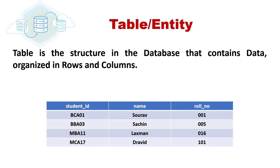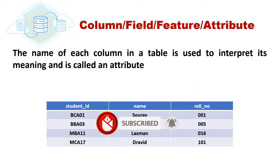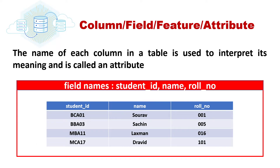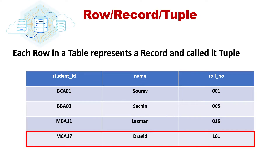So what is a table or entity? A table is the structure in the database that contains data organized in rows and columns — for example, the table name is student. What is a column or field or attribute? The name of each column in a table is used to interpret its meaning and is called an attribute. Here the field names are student_id and role_number. What is a row or record or tuple? Each row in a table represents a record and is called a tuple. Here four records are present in the table.